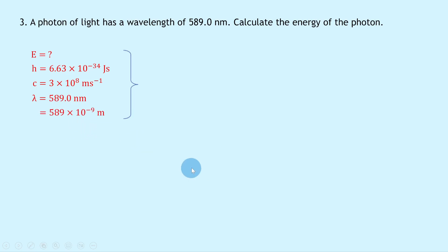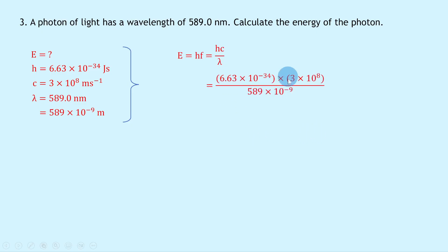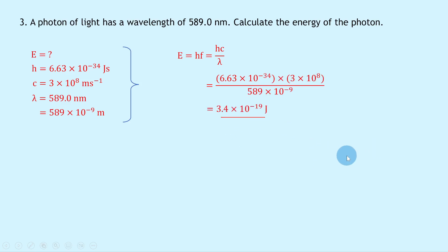Writing down the equation: E = hf = hc/λ. You can see how we get that by rearranging v = fλ for f, giving f = v/λ = c/λ, then substituting into E = hf to get E = hc/λ. Substituting in the numbers: (6.63 × 10⁻³⁴ × 3 × 10⁸) ÷ (589 × 10⁻⁹), which gives an answer of 3.4 × 10⁻¹⁹ joules.